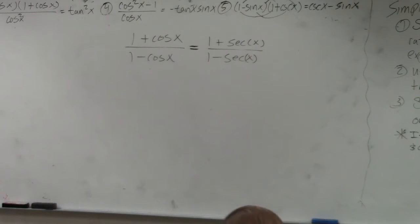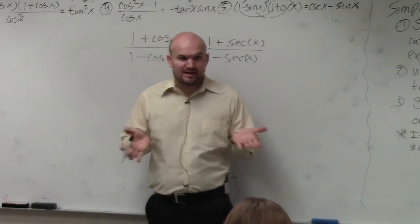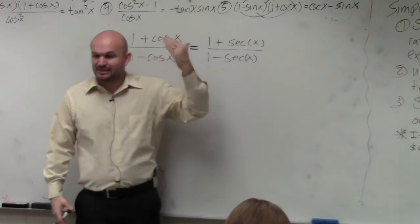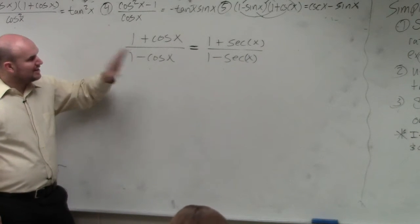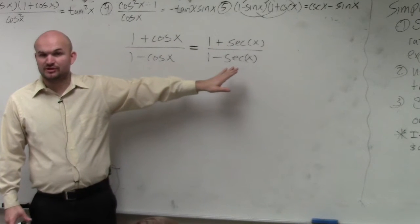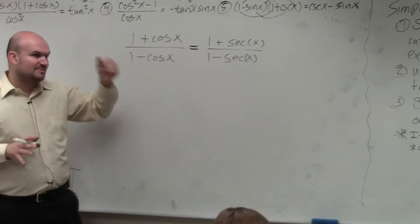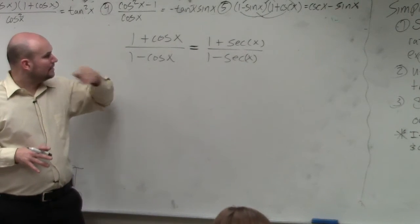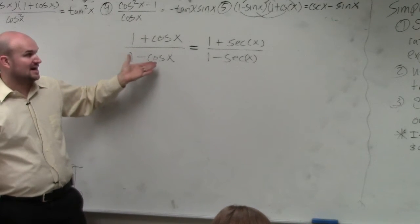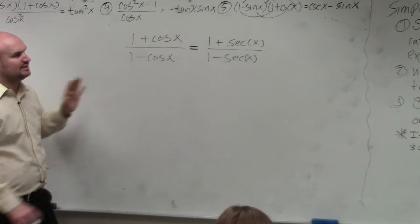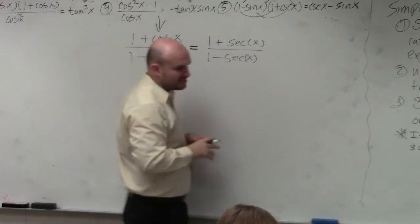First of all, in this problem, we need to decide: should we be working on the left side or should we be working on the right side? When I'm looking at a problem like this, I'm trying to give you my rationale of thinking. I know that cosine and secant are reciprocals of each other, so I don't really want to get too far — I want to try to keep them within the same family. I'm going to decide to work on the left side. It doesn't really matter which side you pick, but you just have to pick a side.